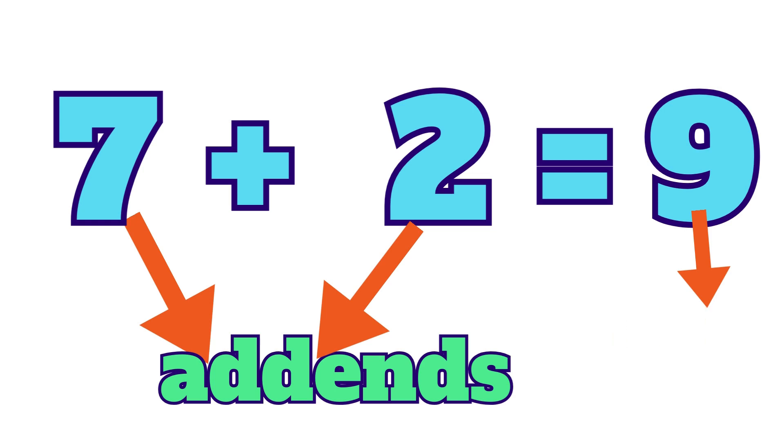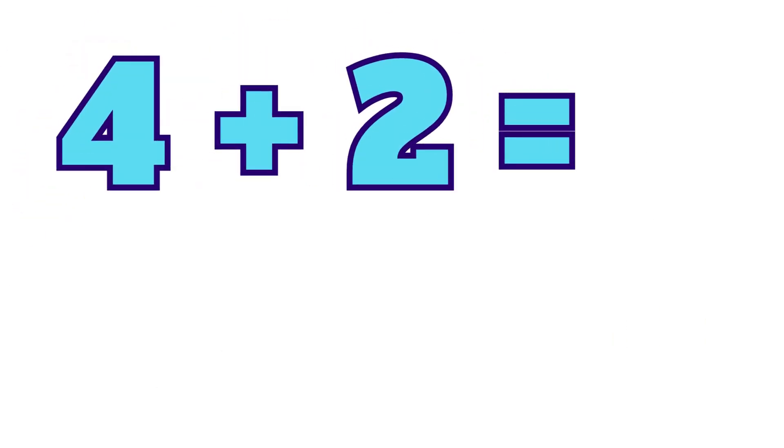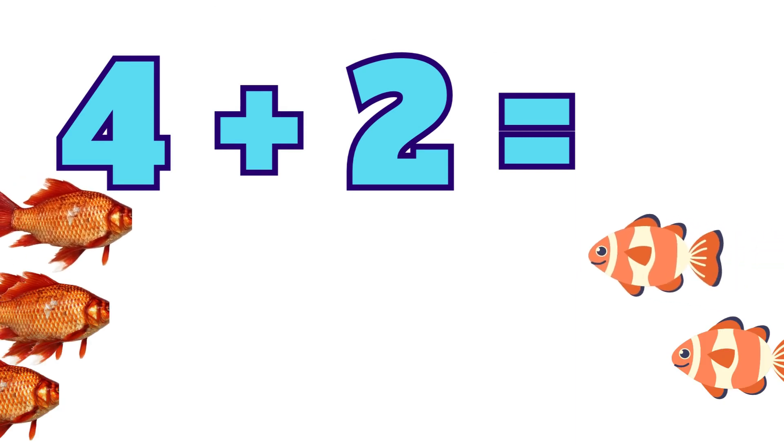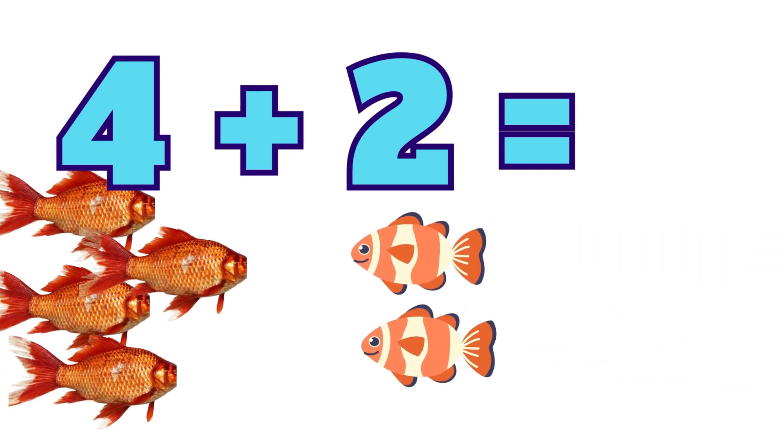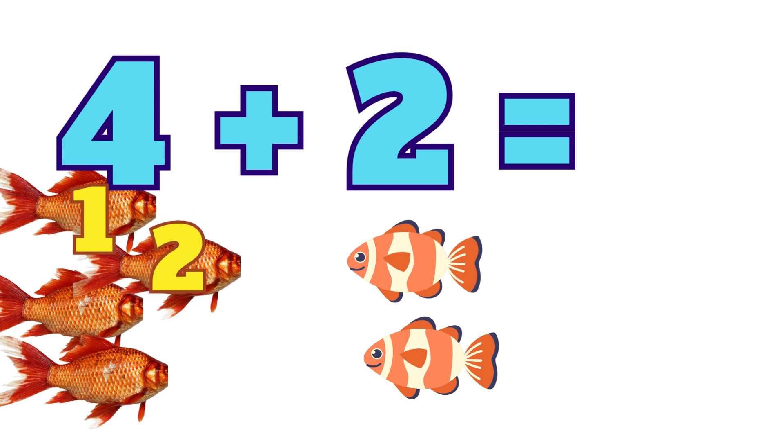Let's practice answering addition. We have four plus two, and the fish represent the counts of the numbers. Let's count one, two, three, four, and on the other side, one, two.